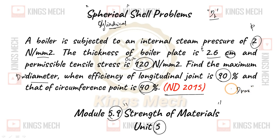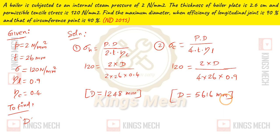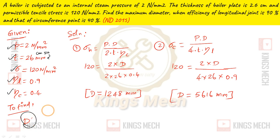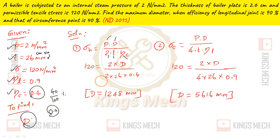Looking at this problem, the hoop stress formula is: sigma_h = P × D divided by (2 × T × circumferential efficiency). The circumferential efficiency is 40%, i.e., 0.4. Substituting these values, we get D_max = 1248 mm.